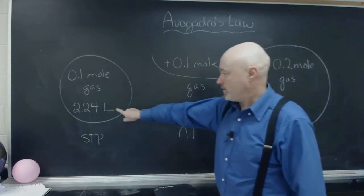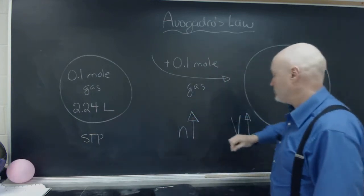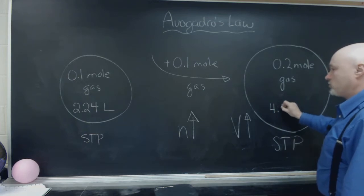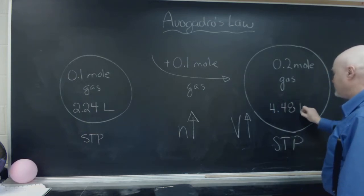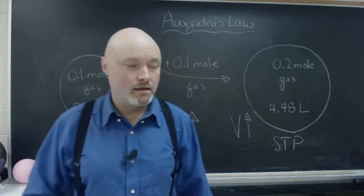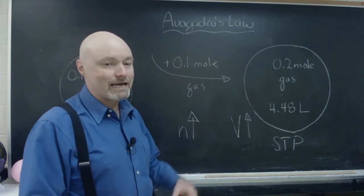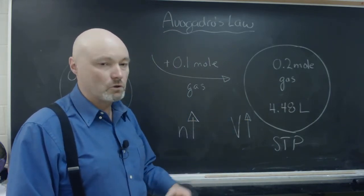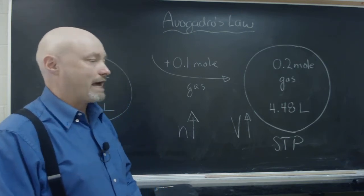And so the number of moles of gas has doubled, we will actually end up with 4.48 liters in our balloon. And that's how we can use Avogadro's Law to relate the number of moles to the volume of a gas.